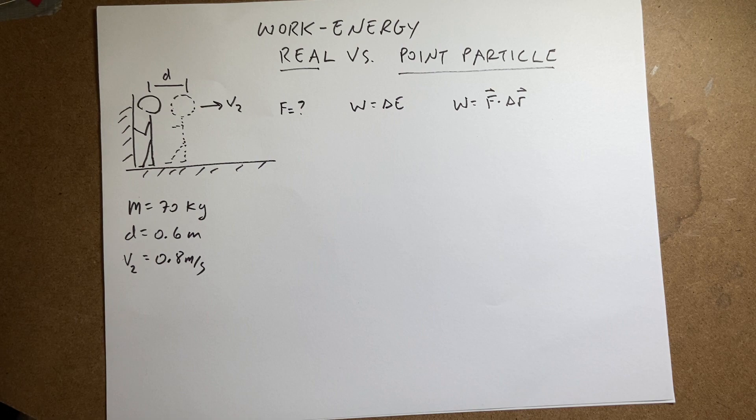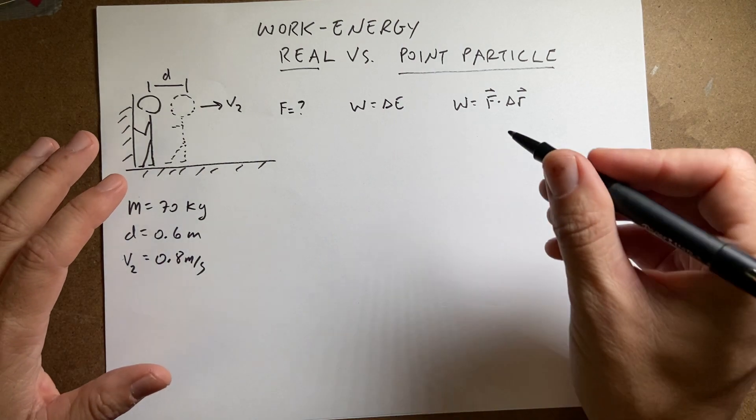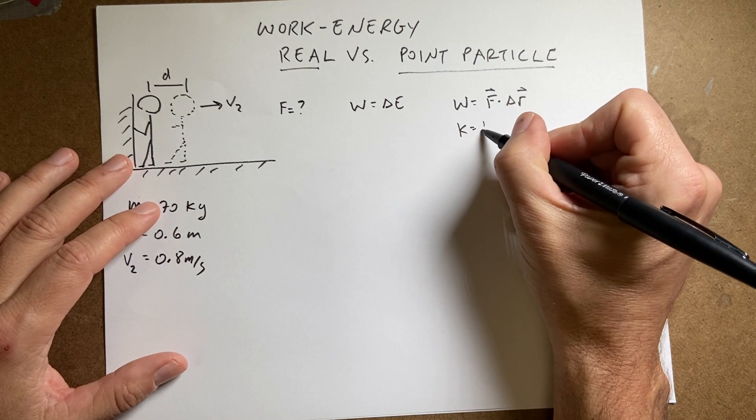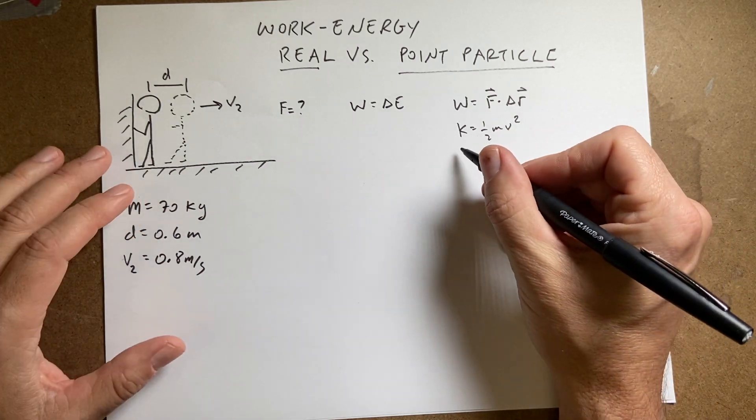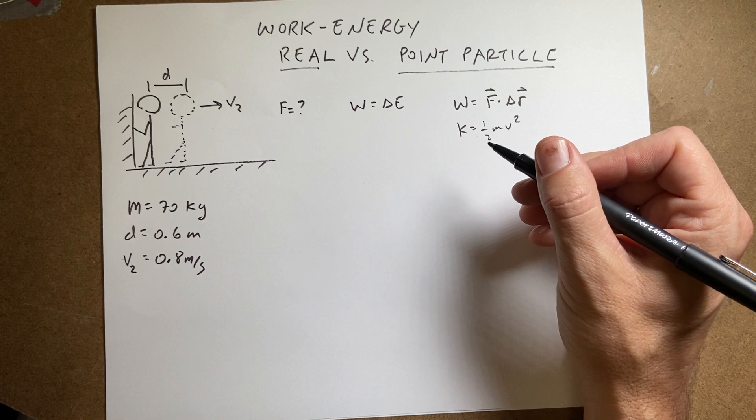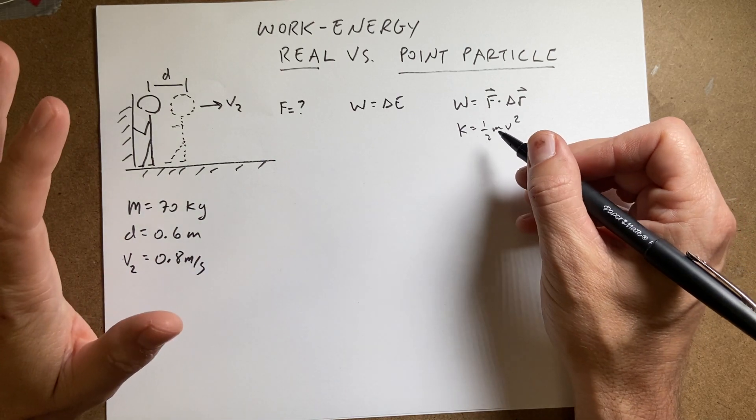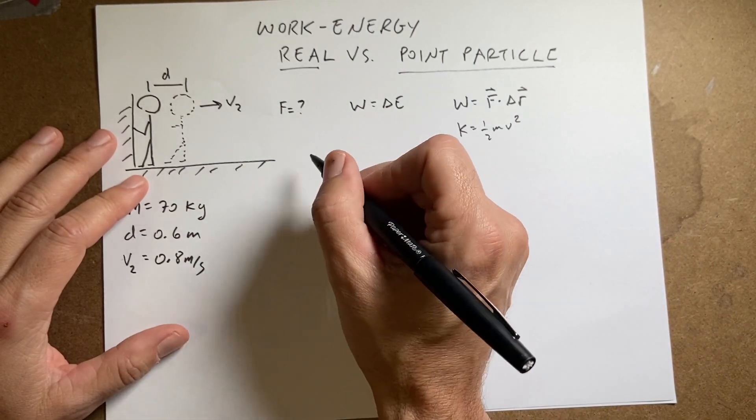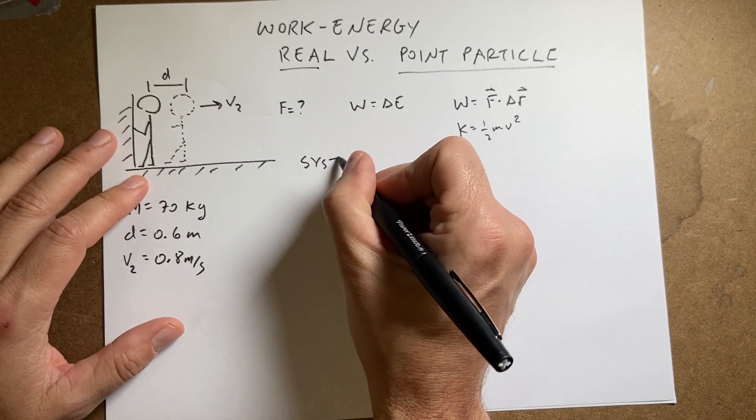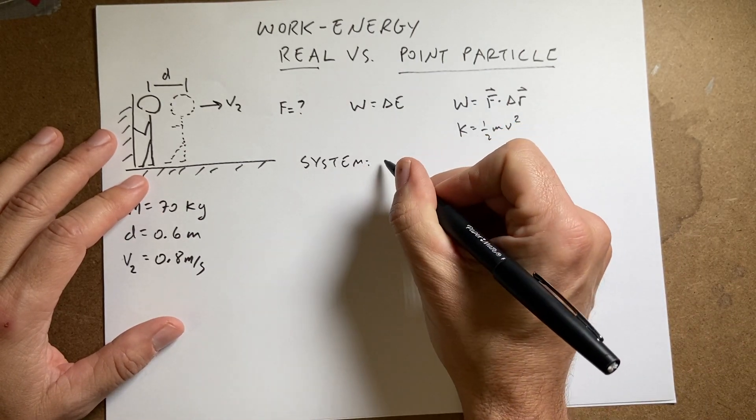For change in energy, we can have different types of energy. We can have kinetic energy, we could have thermal energy, we could have potential energy. Let's just stick with kinetic energy for right now. The first thing I'm going to do is say what my system is. Let's say my system is the real skater.